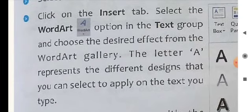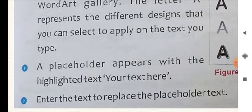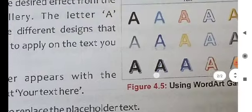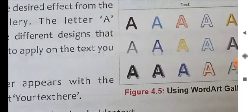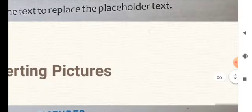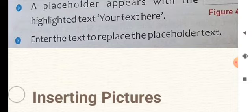So, to summarize: first step is select the text. Number 2, click on the Insert tab. Then go to the Text group and select the Word Art icon. Then a placeholder appears with the text 'Your Text Here'. Just like in PowerPoint where a dotted box appears for typing, a placeholder comes for your text area. Enter your text to replace the placeholder text. For example, if you want to type 'Apple', you type Apple there. These are the steps to insert Word Art in your document.